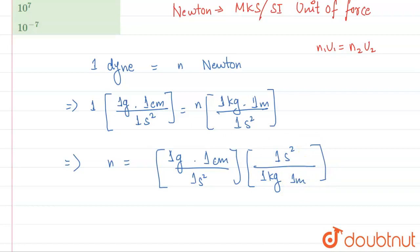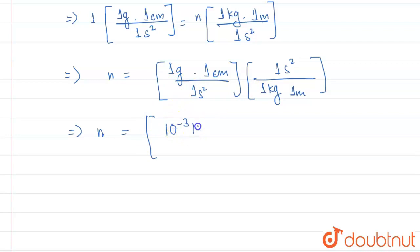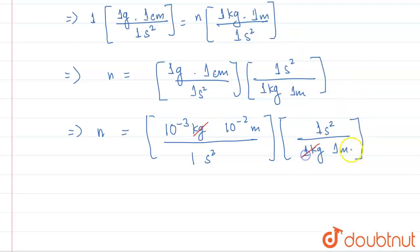We now substitute: 1 gram = 10⁻³ kilograms and 1 centimeter = 10⁻² meters. Substituting gives 10⁻³ kg times 10⁻² m divided by one second squared, all divided by one kilogram times one meter. Canceling kilograms, meters, and seconds squared, we get 10⁻³ × 10⁻² = 10⁻⁵.